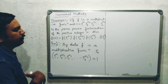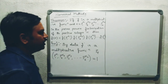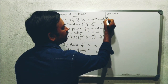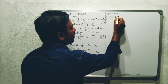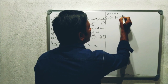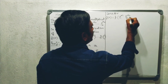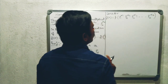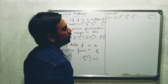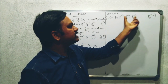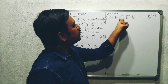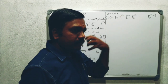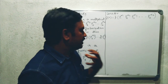So, f of n is equal to f of p1 to the power of alpha 1, into f of p2 to the power of alpha 2 — that is the proof. Since f is a multiplicative function, f of M into N can be written as f of M into f of N, because F is a multiplicative function.